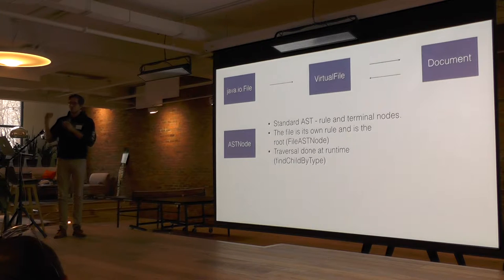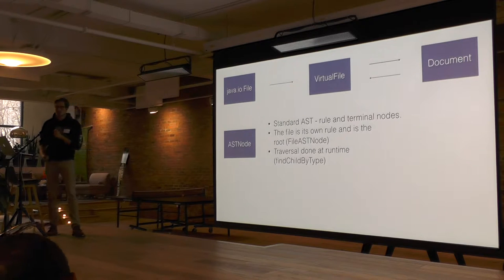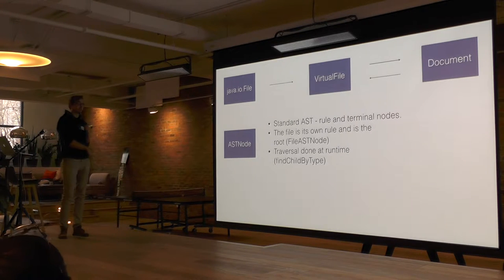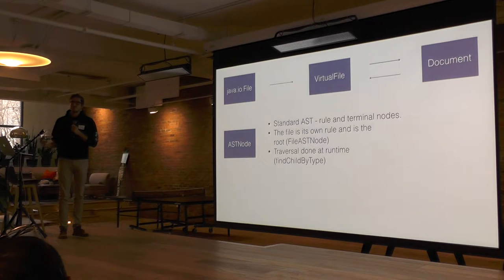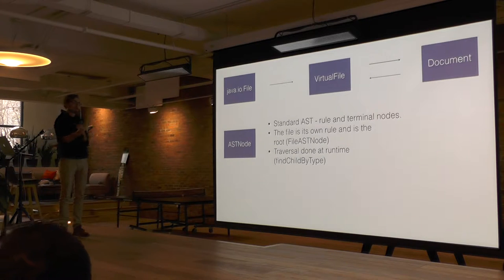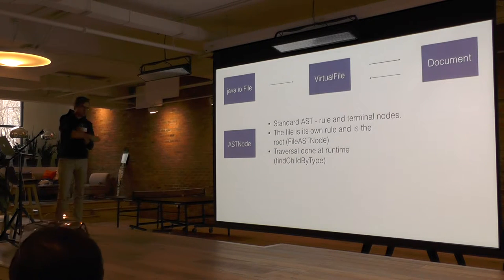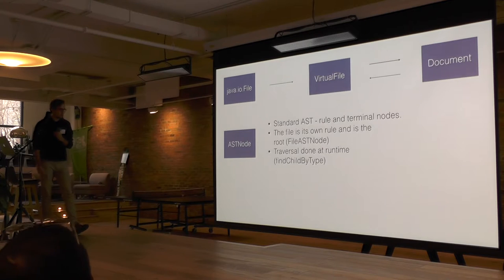With the AST node, you can do all this traversal at runtime and learn more about the open file. But because it's done at runtime, you can get runtime exceptions and have to do casting at runtime. So if you had a class and wanted to find all its methods, you'd look over its children, check if they're an instance of method, and do your logic on that.